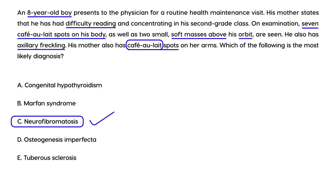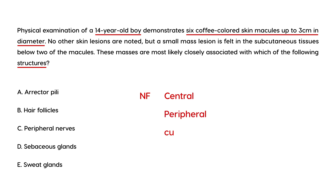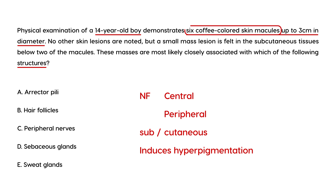Clinical vignette 2: A 14-year-old boy has six coffee-colored skin macules up to three centimeters in diameter. No other skin lesions are noted, but a small mass lesion is felt in the subcutaneous tissues below two of the macules. In neurofibromatosis, peripheral tumors are mostly cutaneous or subcutaneous and induce hyperpigmentation seen as coffee-colored macules — also known as café au lait spots. These masses are most closely associated with peripheral nerves, making that the correct answer.